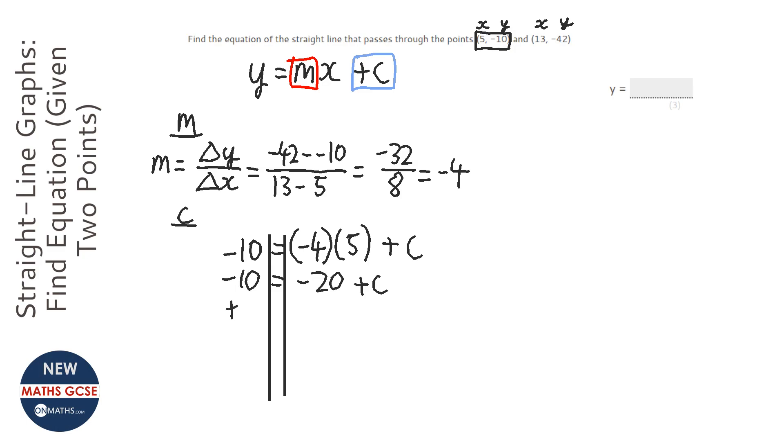That's going to be 10 equals c, or c equals 10. Same thing. So, we've worked out what c is. We can actually write the formula now, or the equation of the line now. So, it's minus 4x plus 10, which is plus 10 because c is positive. If c was negative, it would be take away the value.